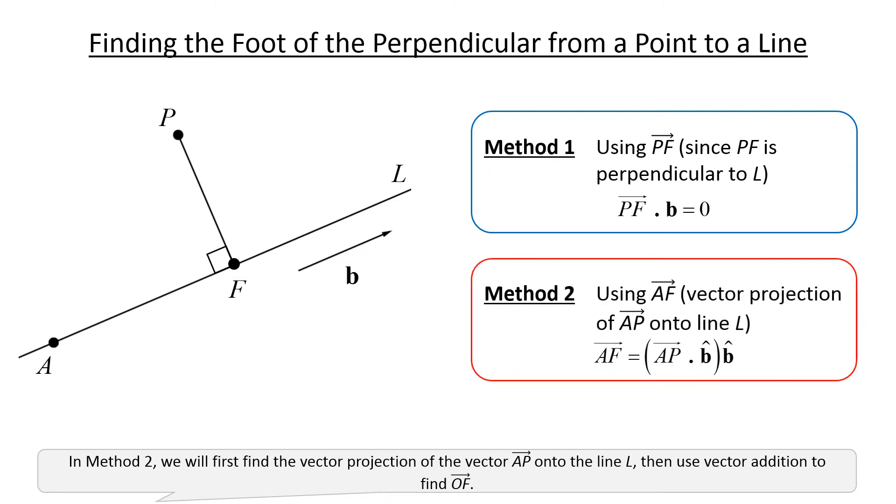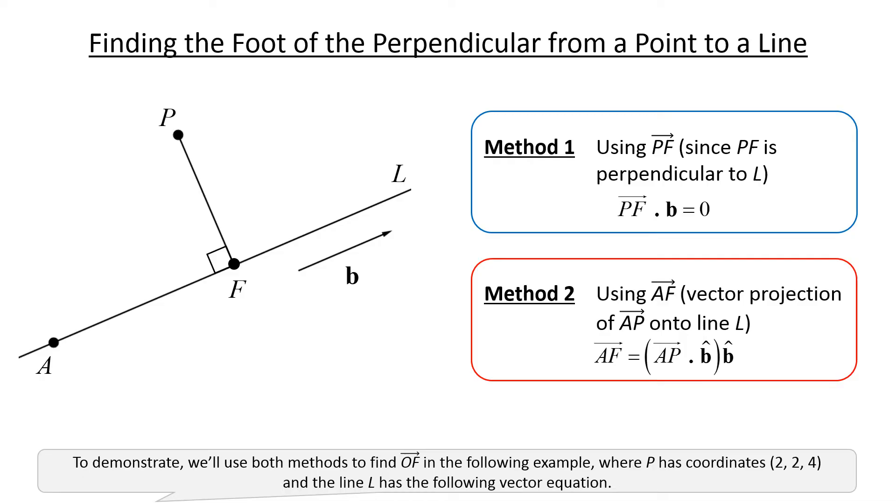In method 2, we will first find the vector projection of the vector AP onto the line L, then use vector addition to find OF.